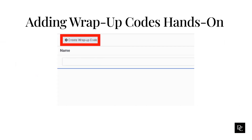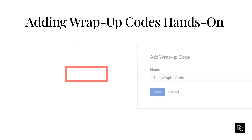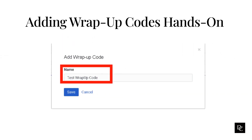To create a wrap-up code, under Contact Center, click on create wrap-up code. The add wrap-up code dialogue box opens. In the text box, enter a unique wrap-up code name. The wrap-up code you created should now populate in the wrap-up codes window.